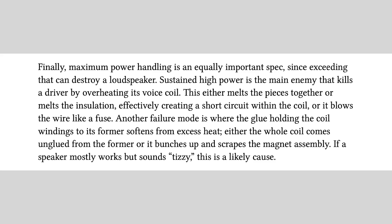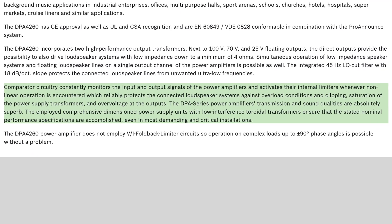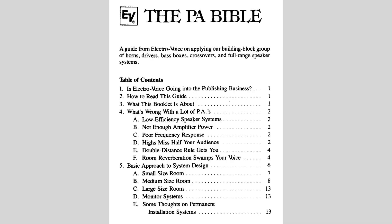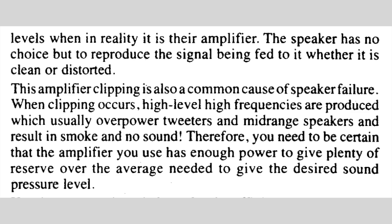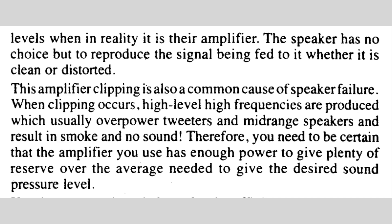You might say Ethan Weiner doesn't have cutting-edge technology — so let's look at what Electro Voice say. They're a leading manufacturer of PA systems, and on this particular amplifier they have a comparator circuit built in which detects clipping and then severely limits the output to protect their speakers. But even so, if we look at Electro Voice's PA Bible, they explicitly say that clipping results in distortion that overpowers the tweeters and mid-range speakers and results in smoke and no sound.